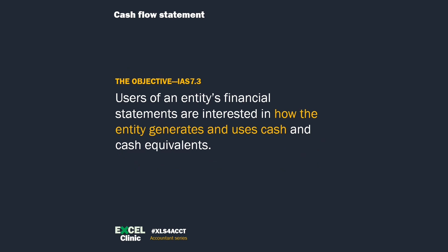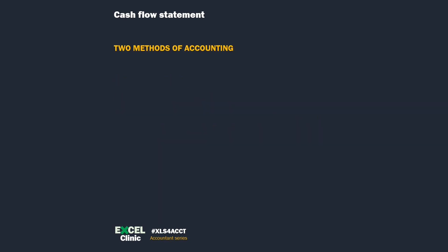First thing first, why do we need a cash flow statement? IAS 7, which is the IFRS standard that talks about cash flow statements, says: financial statement users are interested in knowing how the entity generates and uses cash. Cash accounting is the most basic way of accounting and is acceptable in certain jurisdictions for small businesses like sole proprietorships. Essentially, the profit under this method is the cash flow, so you don't need a separate cash flow statement.